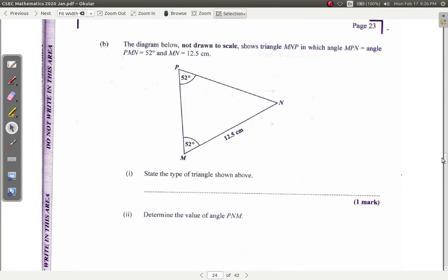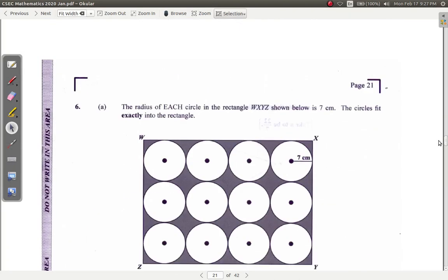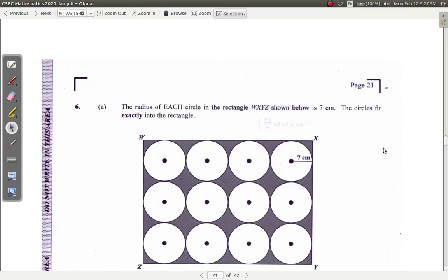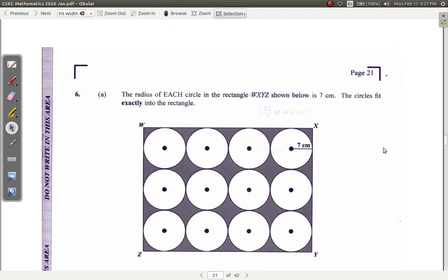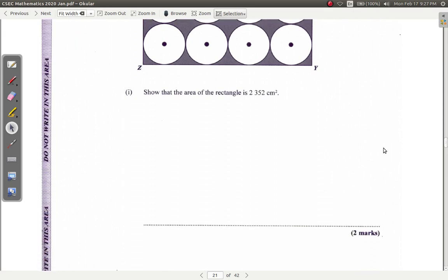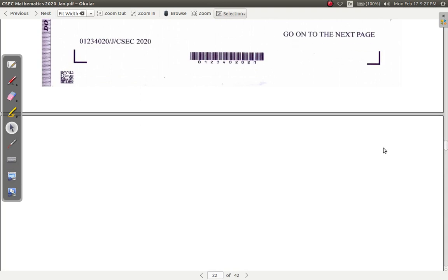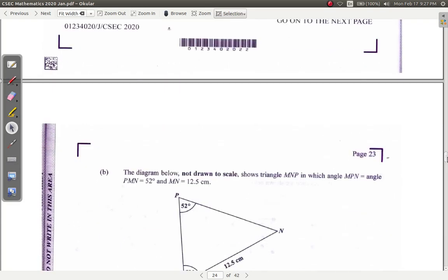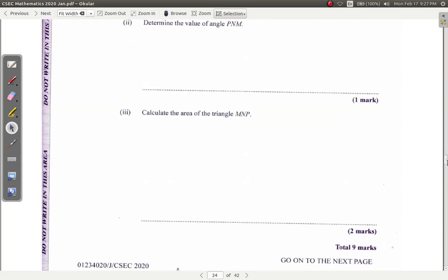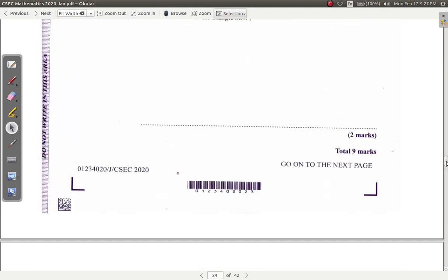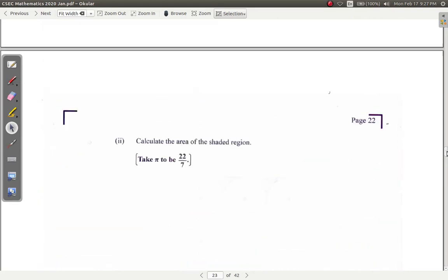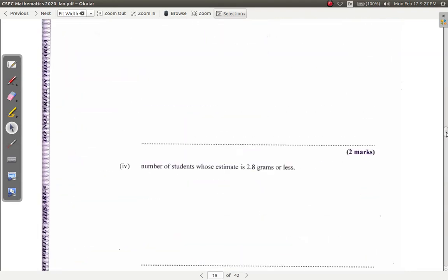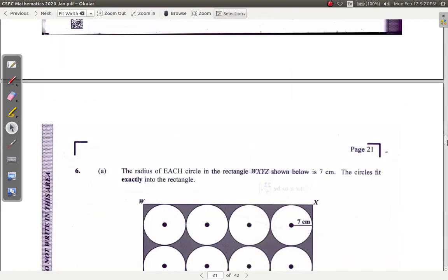Let's see what question 6 is saying. It's a measurement question. You have circles that fit exactly in the rectangle. Show that the area of the rectangle is so and so. Calculate the area of the shaded region. And then you have to calculate some angle here in this triangle. You probably would have to use the sine and cosine rule there. That was question 6.